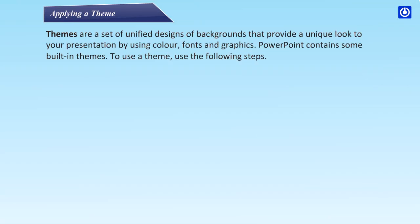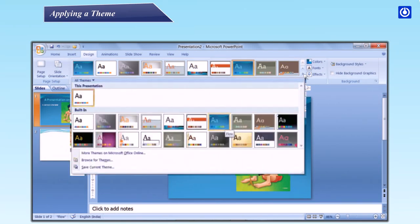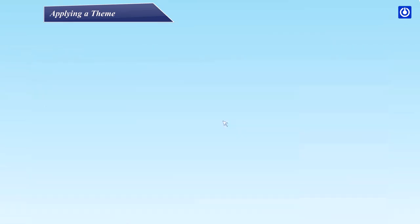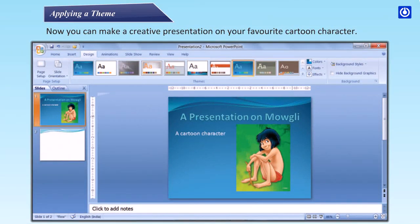Applying a theme: Themes are a set of unified designs of backgrounds that provide a unique look to your presentation by using color, fonts, and graphics. PowerPoint contains some built-in themes. To use a theme: Step 1 – Click on the Design tab. Step 2 – In the Themes group, click More. A theme gallery opens up. Step 3 – Click the theme that you want to use. Your selected theme will be applied to your slide. Now you can make a creative presentation on your favorite cartoon character.